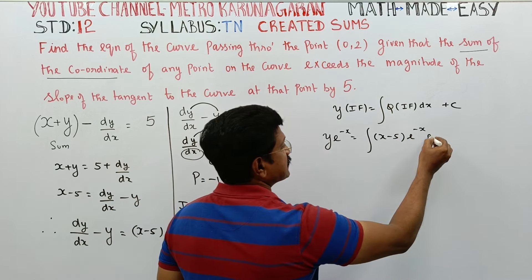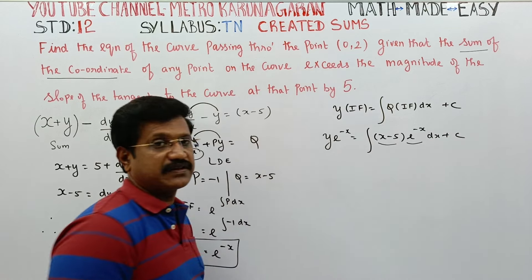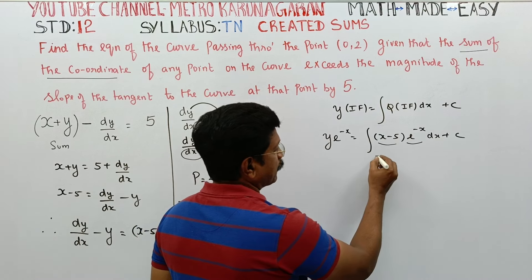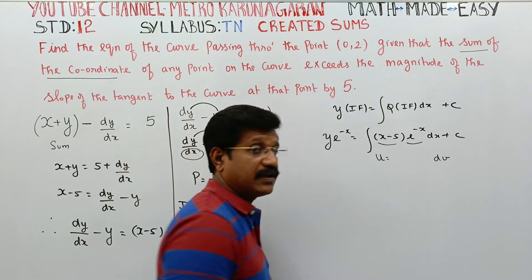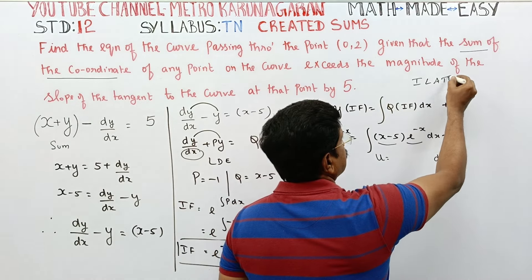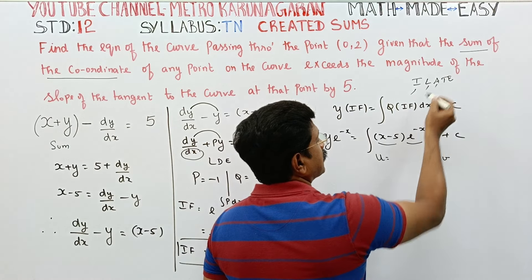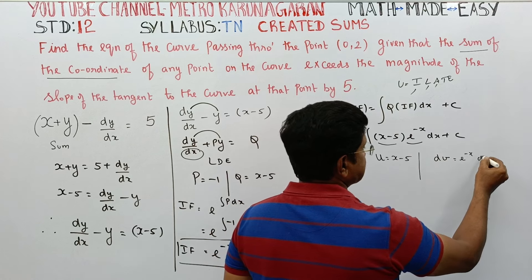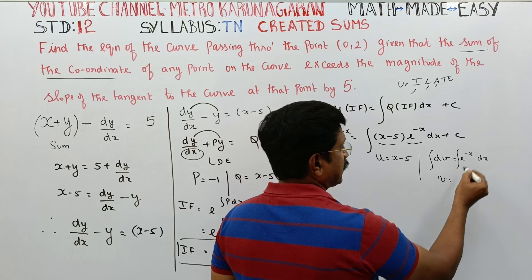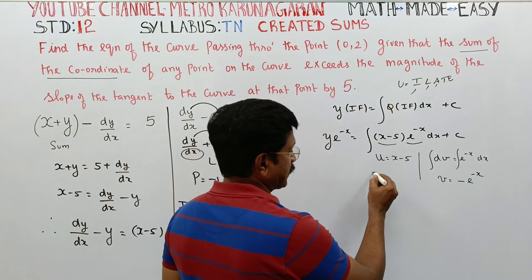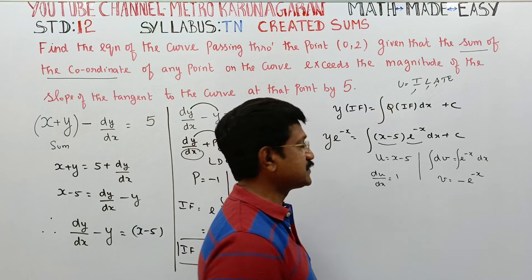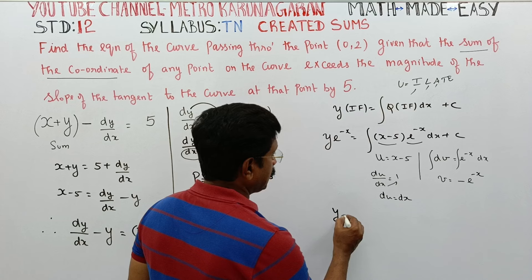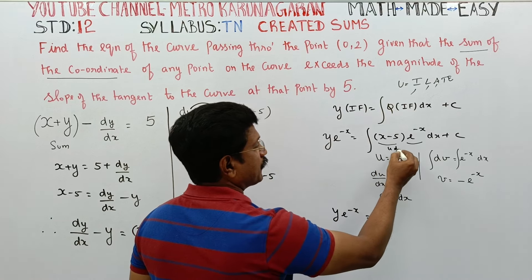Substituting: y into e^(-x) equals integration of (x minus 5) times e^(-x) dx plus c. Using integration by parts with the ILATE rule — Inverse, Logarithm, Algebra — the algebraic function (x minus 5) is u, and dv is e^(-x) dx. So v equals minus e^(-x), and du equals dx.